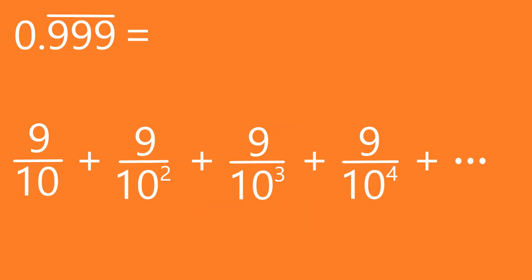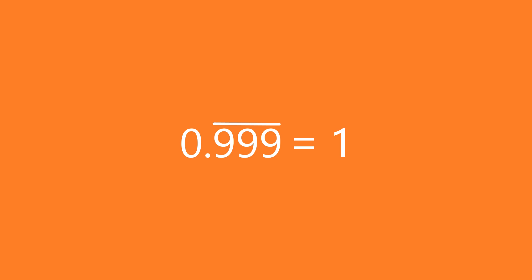And some of you might cry foul here and say, but what about the number 0.999 repeated? Well, this number can be written as the sum 9 tenths plus 9 over 10 squared plus 9 over 10 cubed plus 9 over 10 to the fourth and so on. And this sum is one of those infinite sums that adds up to something finite. And in this case, this sum adds up to one. That is, the number 0.999 repeated is actually equal to one.